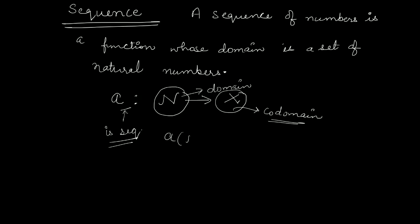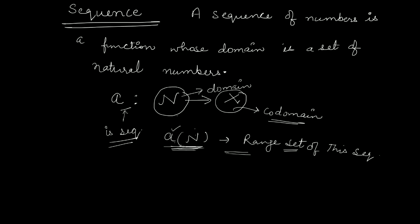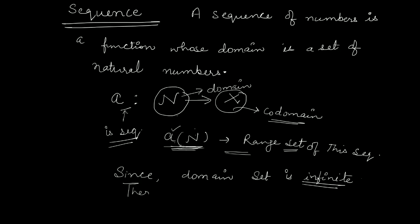And a(n) is the range set — it is nothing but the images of the set of natural numbers. So, a is a sequence going from N to X and a(n) is the range set of this sequence. Since the domain set is infinite in nature, our sequence also has infinitely many elements. So, a sequence is always infinite.